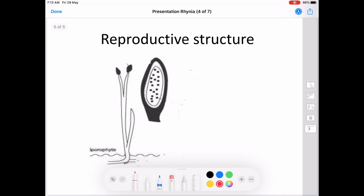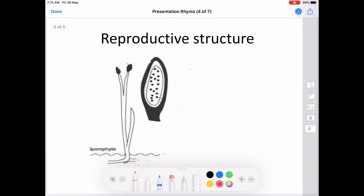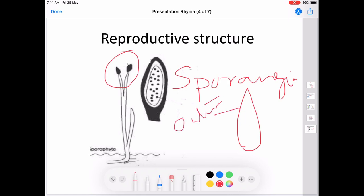Now, the reproductive structure. The reproductive structure is represented by the sporangia. Sporangia is terminal in position and are solitary. The sporangia is conical in shape or slightly oval in shape. It carries three layers: an outer layer, a middle layer.